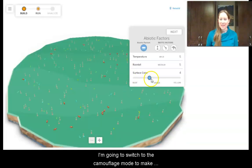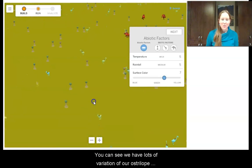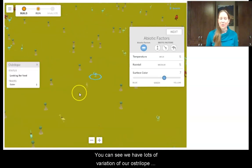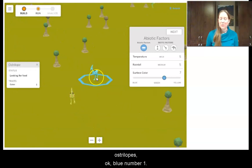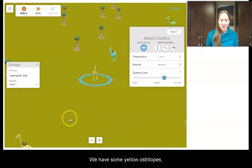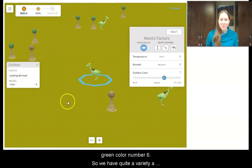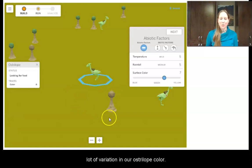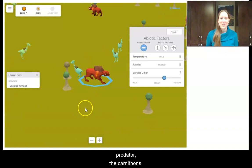I'm going to switch to the camouflage mode. I'm going to make my surface color yellow number seven. You can see we have lots of variation of our ostrilope population. So we have some blue ostrilopes, blue number one. We have some yellow ostrilopes, yellow number seven. We have green ostrilopes, color number six. So we have quite a variety, a lot of variation in our ostrilope color. You can also see our ostrilope predators, the carnithons.